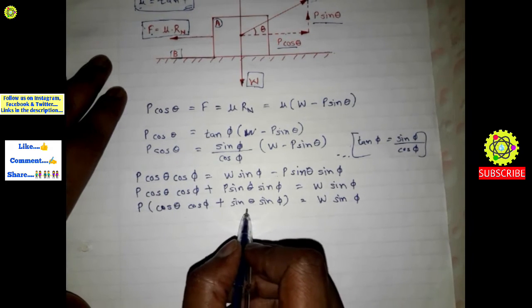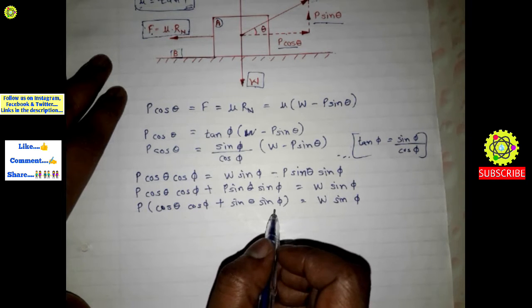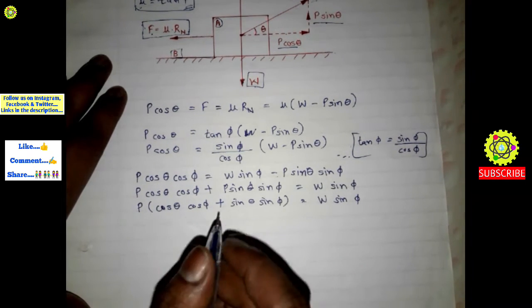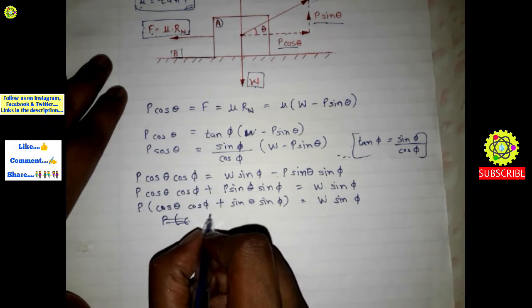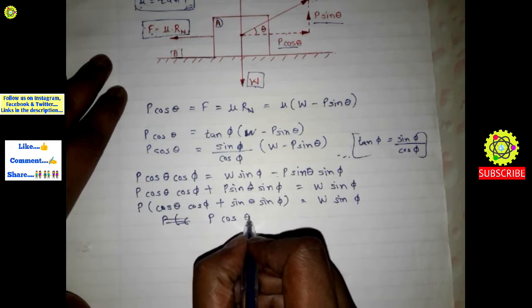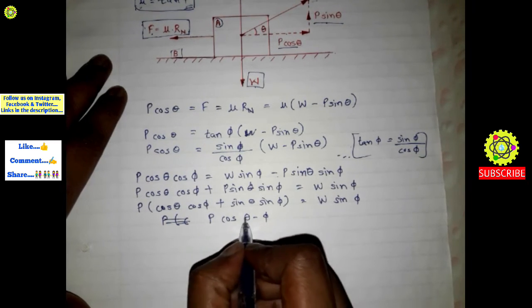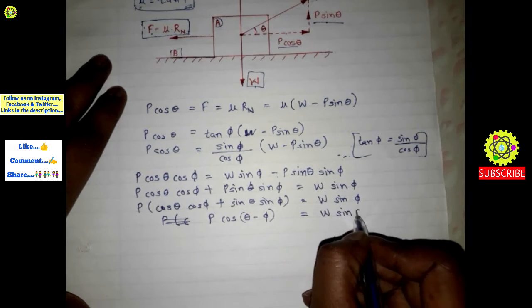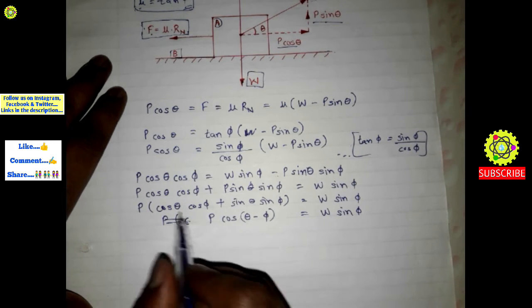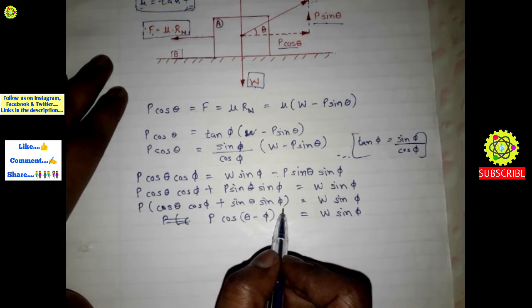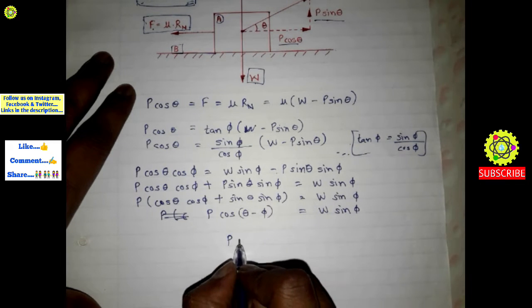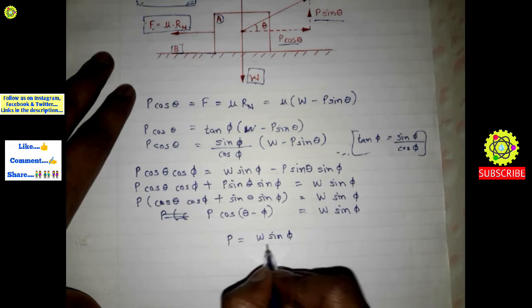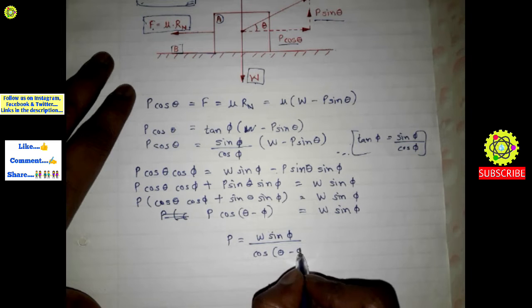Now, cos θ cos φ plus sin θ sin φ is equal to cos(θ minus φ) by the trigonometric identity. So P into cos(θ minus φ) is equal to W sin φ, giving us: P is equal to W sin φ upon cos(θ minus φ).